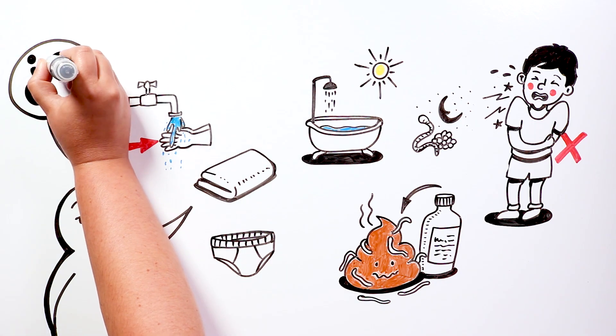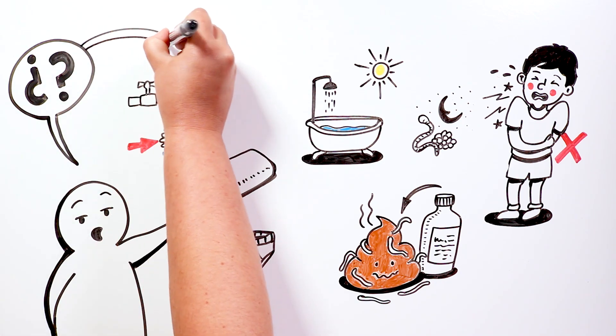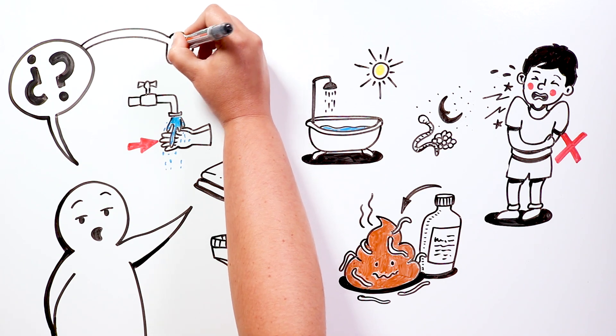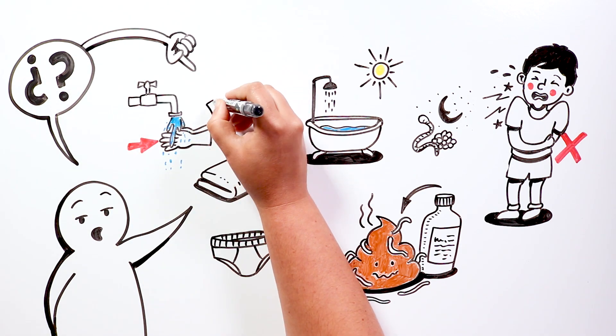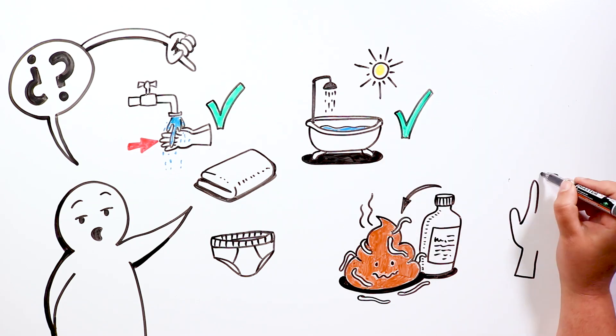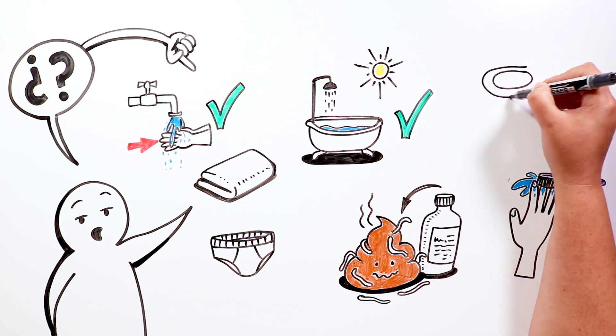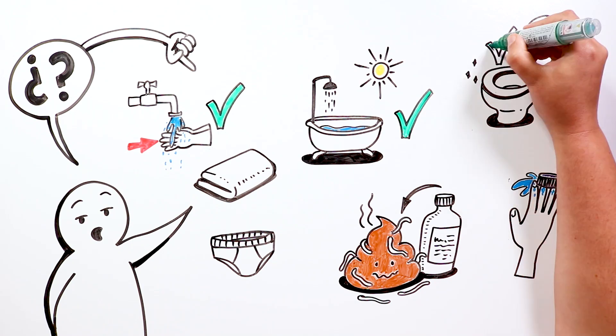And how can we avoid having this infection? Well, the steps are very similar to those that an infected person should take. It is very important to have good hygiene habits, brush your nails and not bite them, disinfect the toilet and change underwear daily.